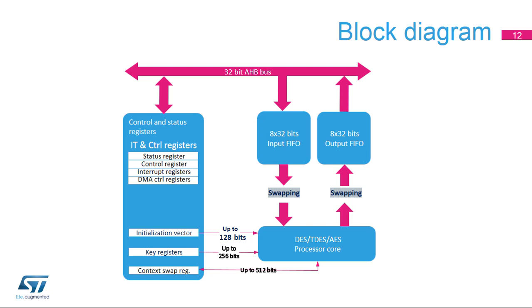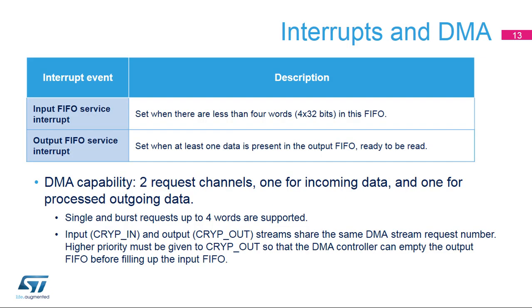The cryptographic processor block diagram is presented in the slide. The peripheral is composed of several hardware modules: the processor core responsible for one AES or DES block operation, input and output FIFOs connected to the bus interconnect, and a module that embeds control and status registers. Two functional interrupts are defined: one set when the input FIFO is ready to receive data, and one set when output data are ready to be flushed by the CPU or the DMA. The DMA has two streams plugged to the cryptographic processor, sharing channel number two, with the output stream having higher priority than the input one.